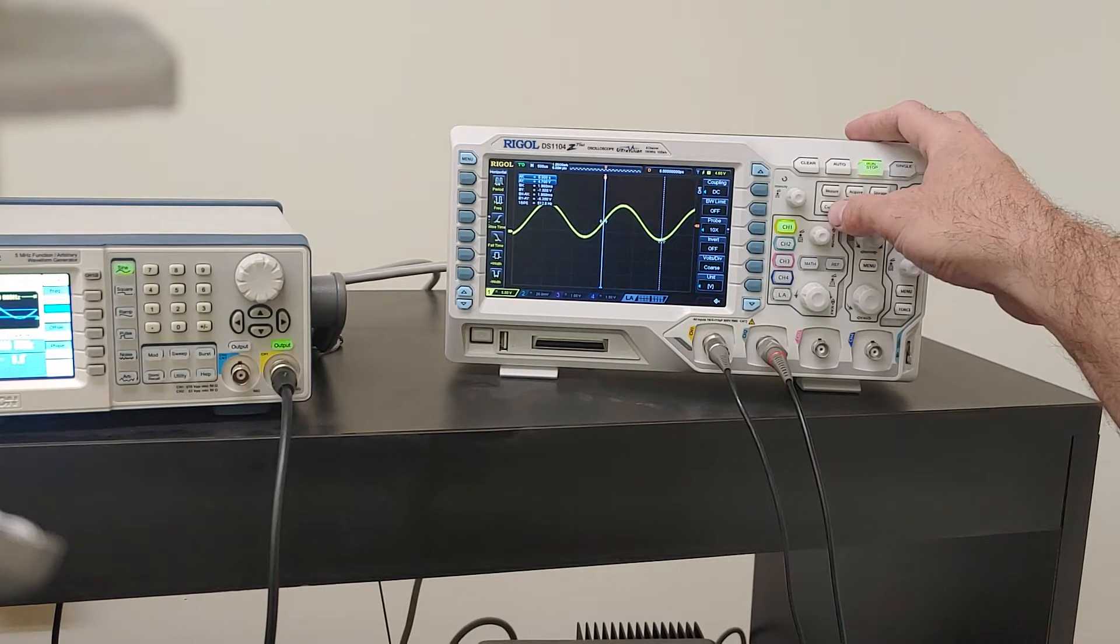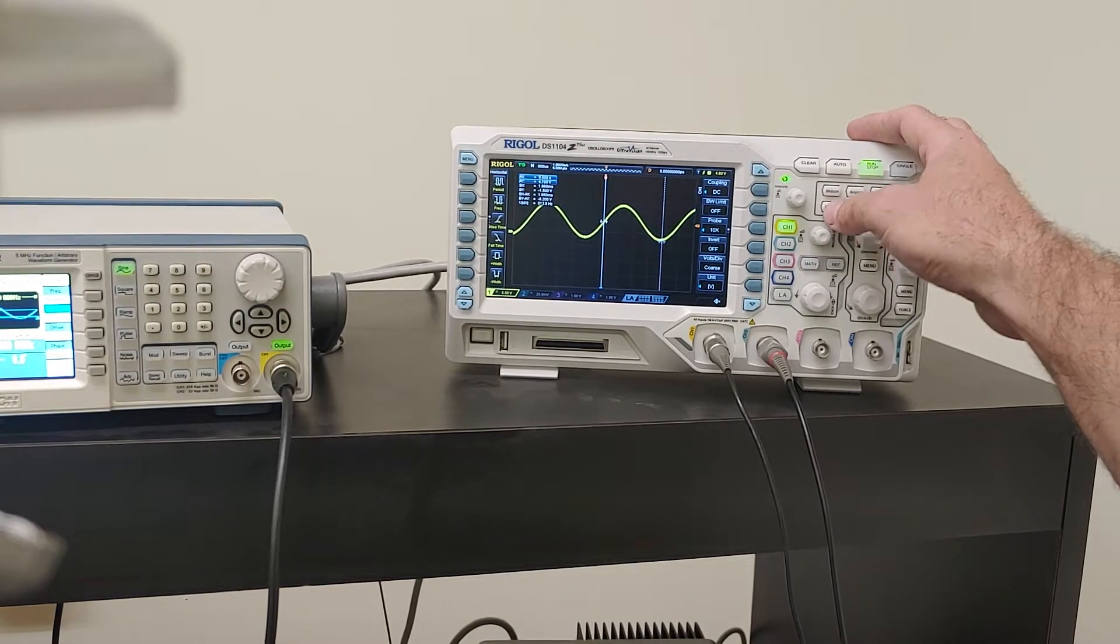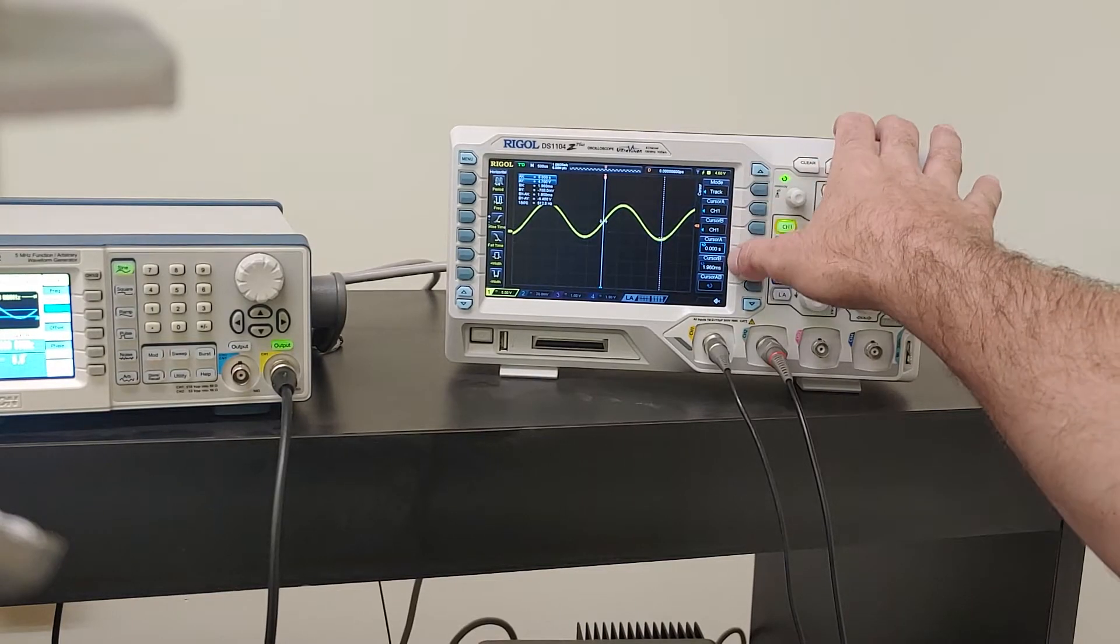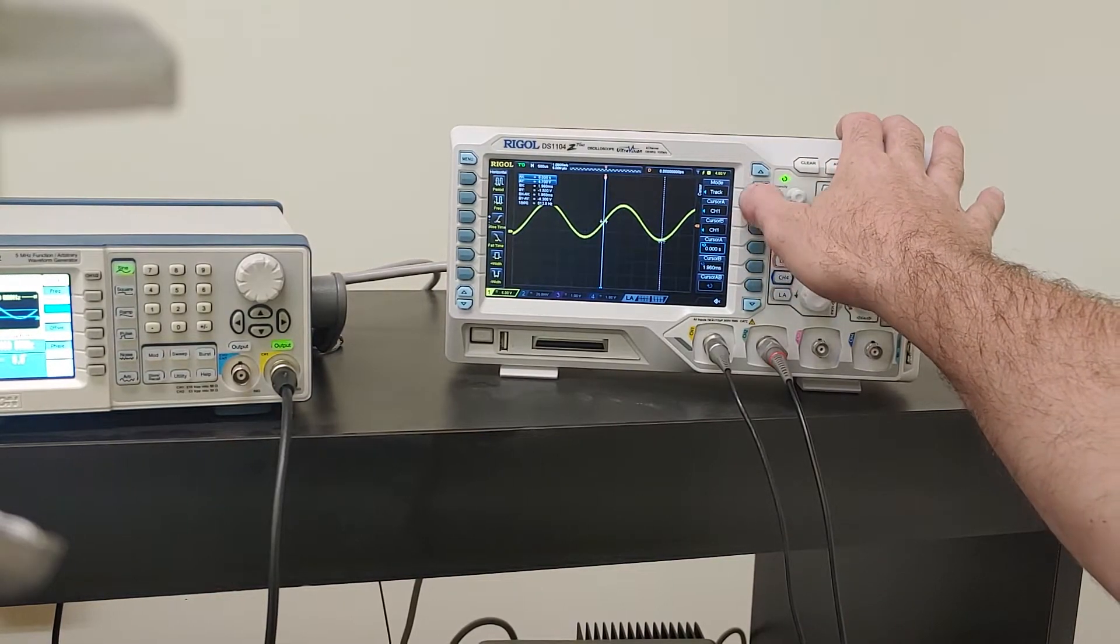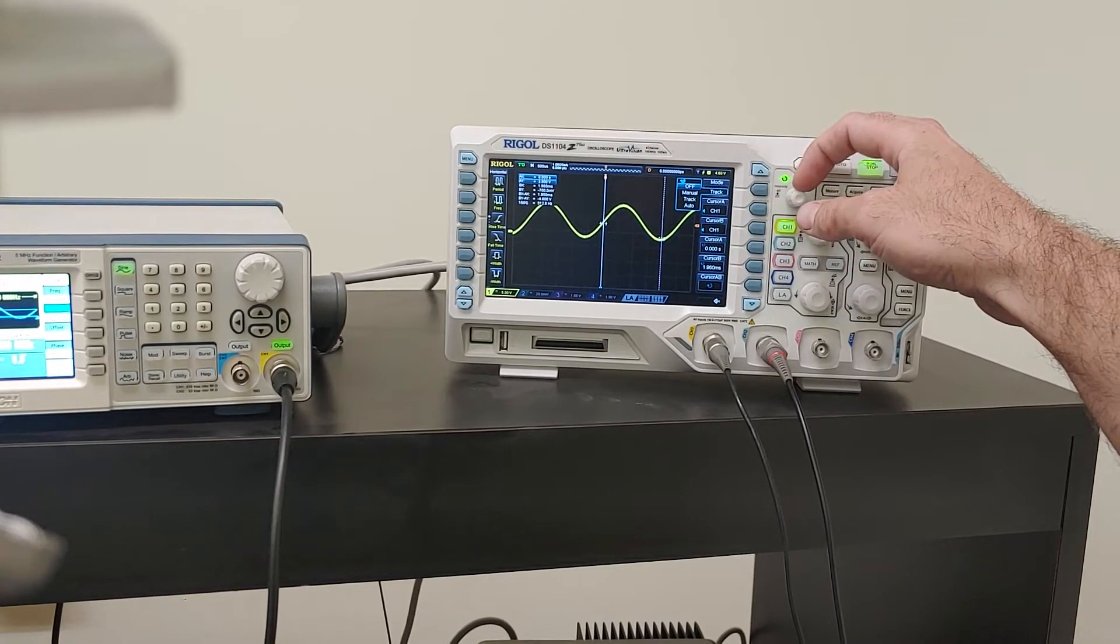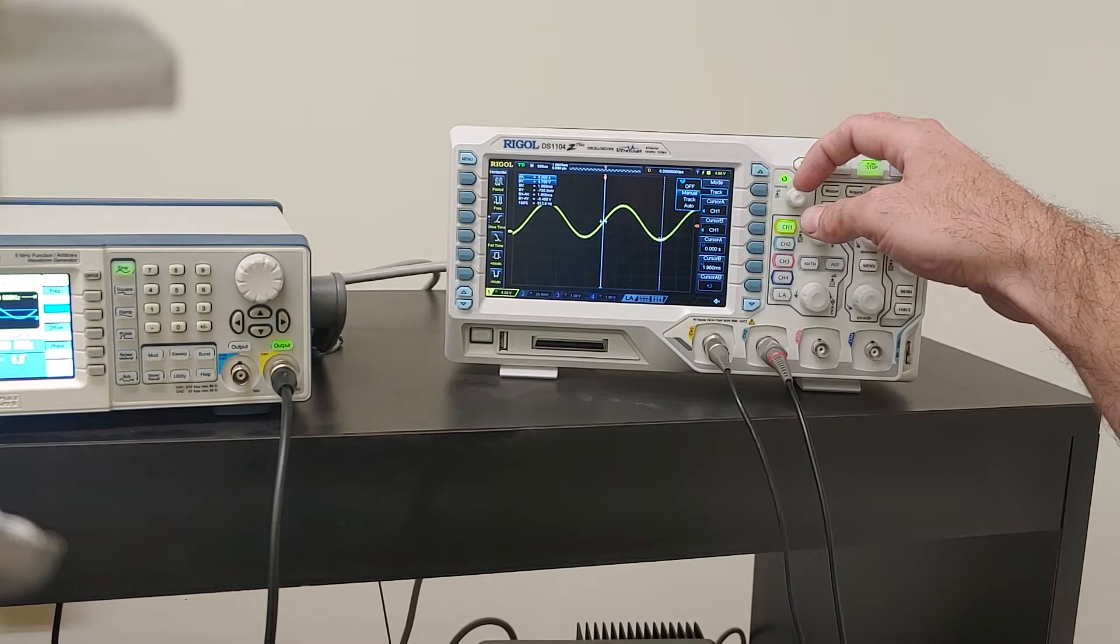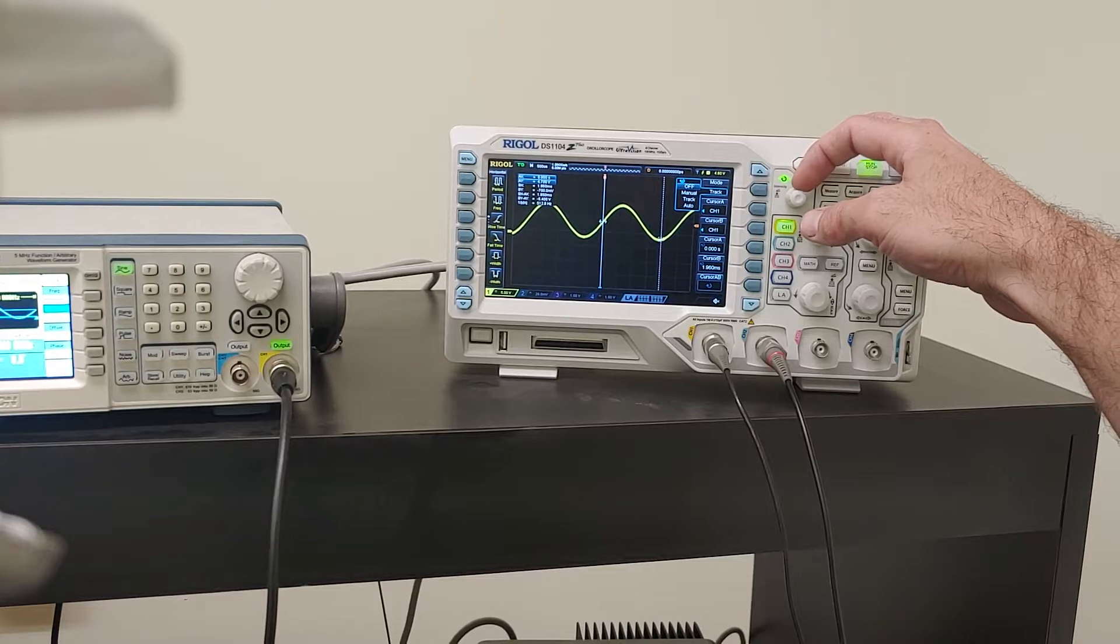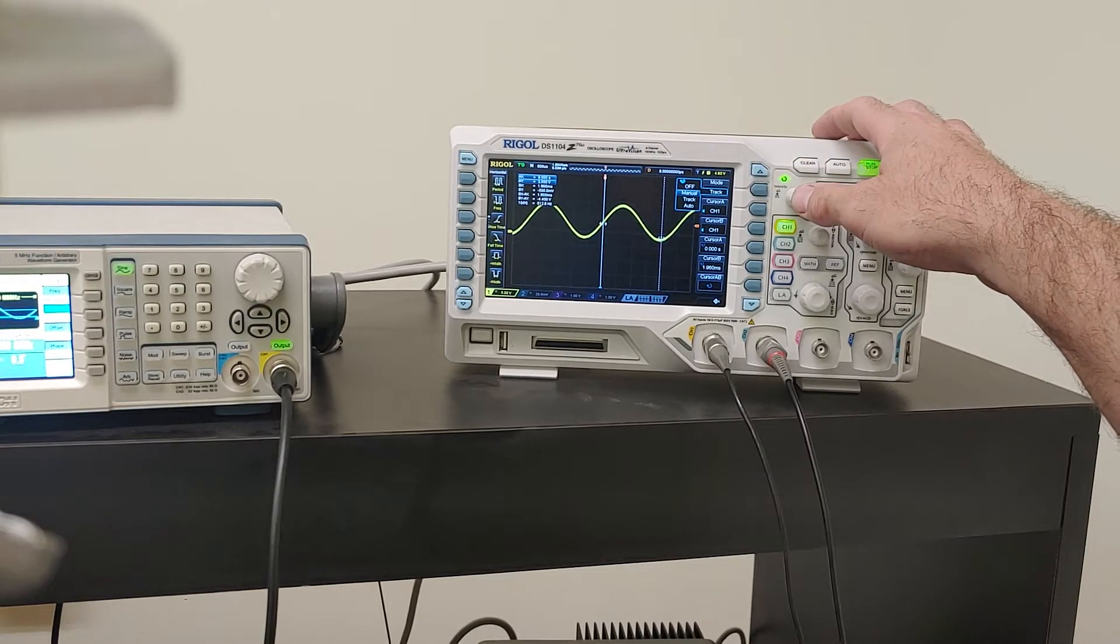But the really nice one is if I press the cursor tool right here, it brings up a menu for the cursor. So it gives me a cursor that can be in several different modes: off, manual, track, and auto. So let's go to manual.